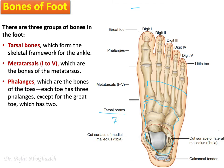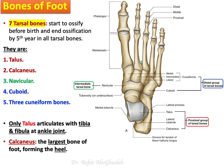The metatarsals are numbered starting from the most medial one, related to the great toe, going from one to five. As for the phalanges, we have 14 total. Each toe has three phalanges, except the great toe which has only two. The rest of the toes have three phalanges.